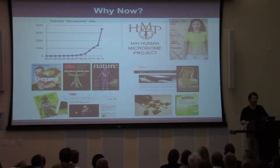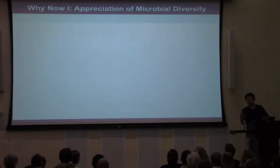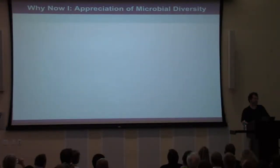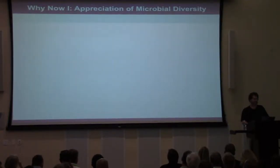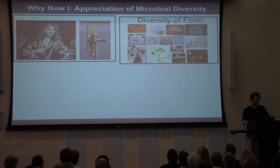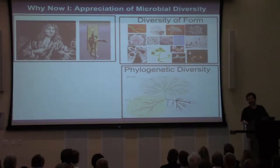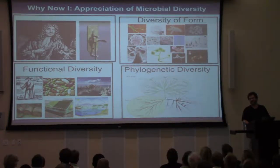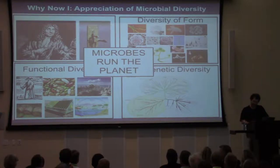One question I'm really interested in is why has this become such a hot topic now? I'm going to go through what I think are some of the explanations. One of them is a growing appreciation of microbial diversity. Over the last 30 or 40 years, there has been an increasing number of studies showing microbes are important in the health and function of particular ecosystems. There's an incredible diversity of form, of phylogeny, and of functional diversity — especially chemical diversity — contained within microbes. We microbiologists think microbes are pretty important to study.